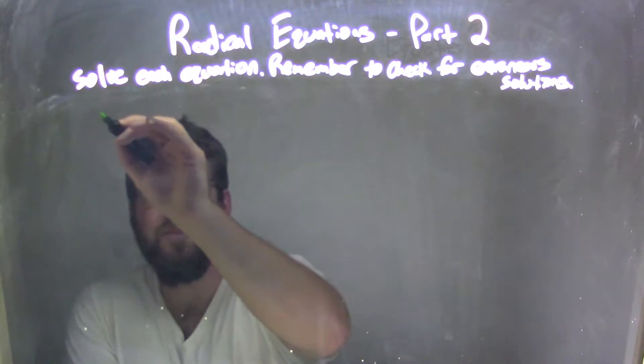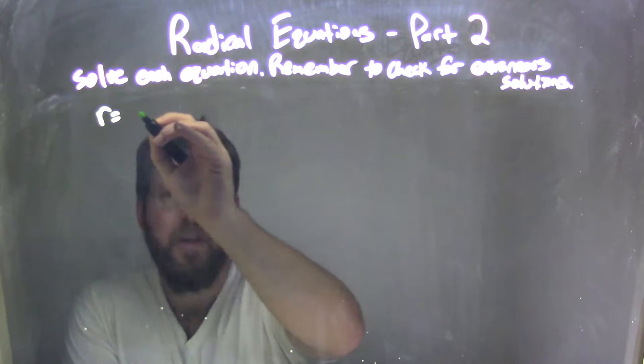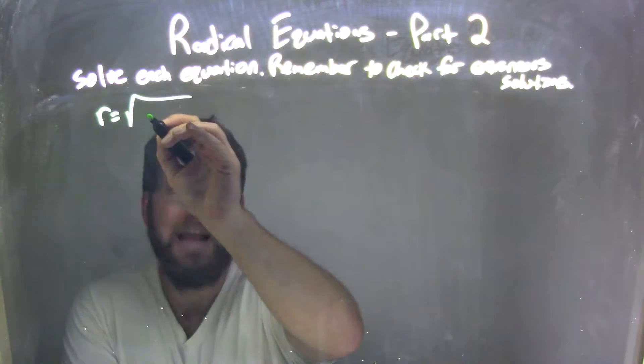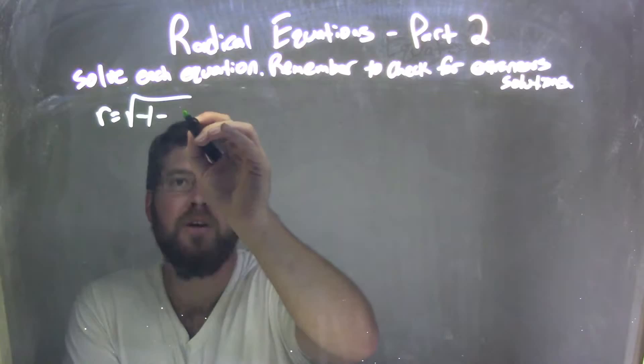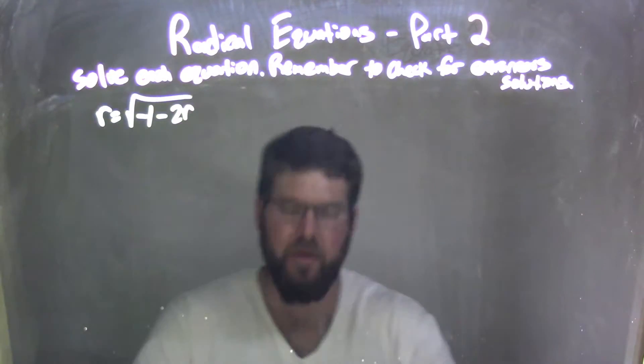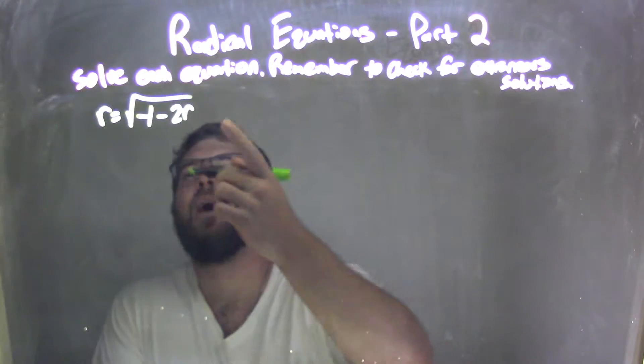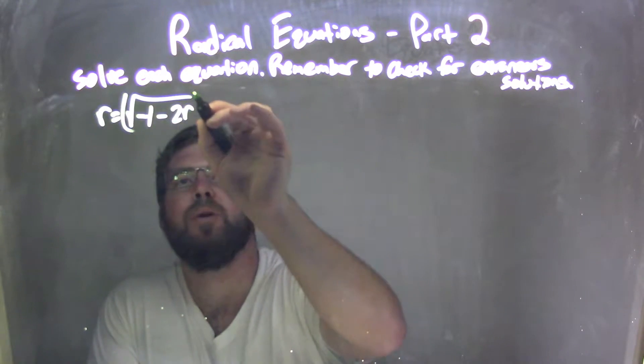So if I was given this equation, r equals the square root of negative 1 minus 2r. What I'm going to do is I'm going to square both sides. Let's get rid of that square root.